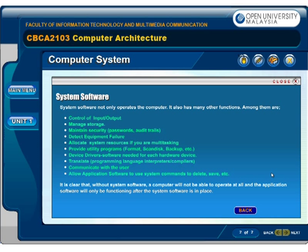System software not only operates the computer, it also has many other functions. Among them are: control of input or output, manage storage, maintain security, passwords, audit trails, detect equipment failure, allocate system resources if you are multitasking, provide utility programs such as format, scan disk, backup, etc., and device drivers — software needed for each hardware device.